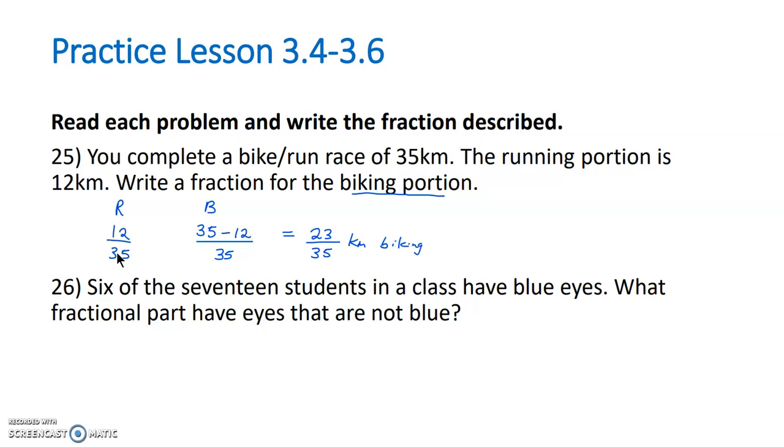So 23 out of the 35 kilometers was for the biking. For number 26, 6 of the 17 students in class have blue eyes. What fractional part have eyes that are not blue? So 6 out of the 17 have blue eyes. So again, that means that the rest do not have blue eyes. So we're going to take the total, 17, and take away the 6 that are blue, and that's going to equal 11. So 11 out of the 17 students do not have blue eyes.